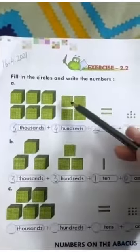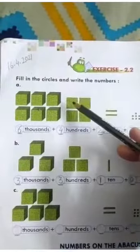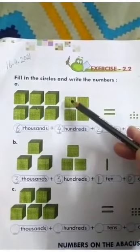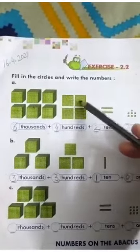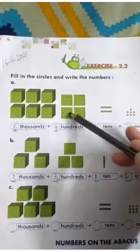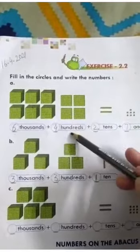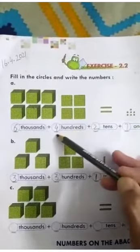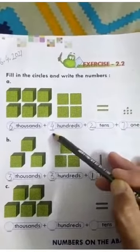In the next figure, there are 4 figures: 1, 2, 3, 4. So with 100s you will write 4.